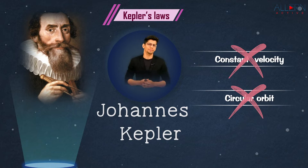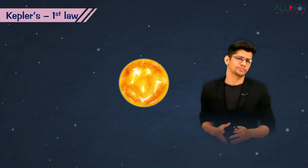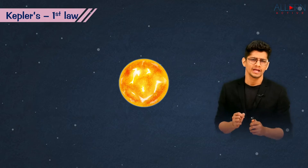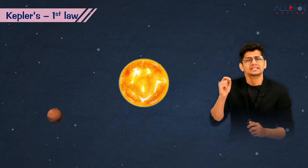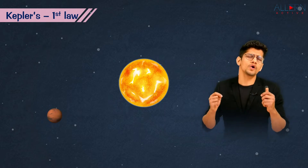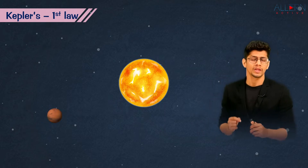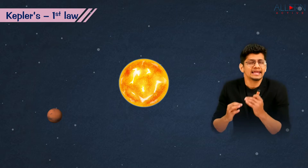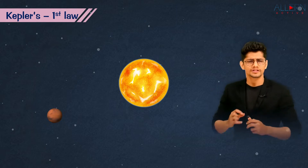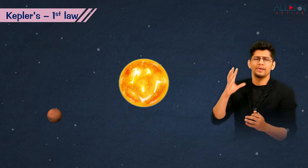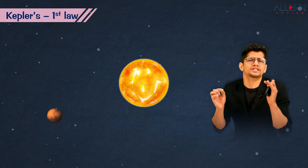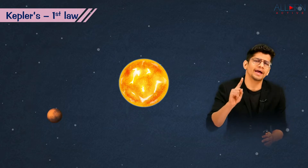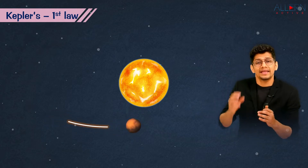Let's start with Kepler's first law. Kepler took the Sun as the reference point and a planet, and started observing. Kepler was a very good observer — whenever he observed something, he noted it on a diagram. He started observing a planet, say Mars, for a fixed period of time — let's say one day.